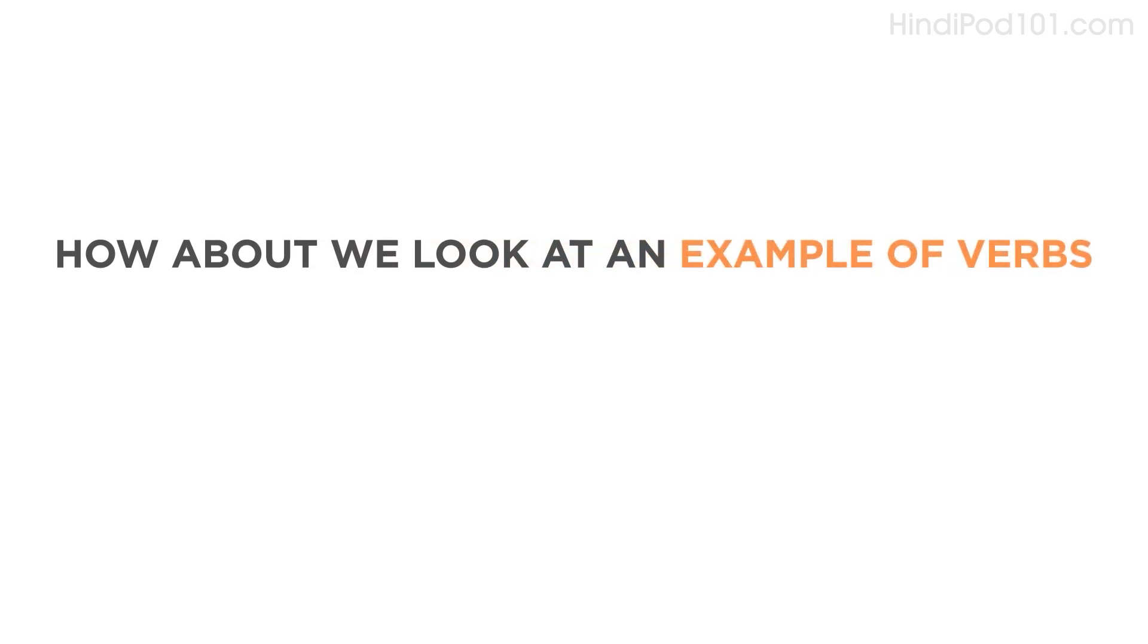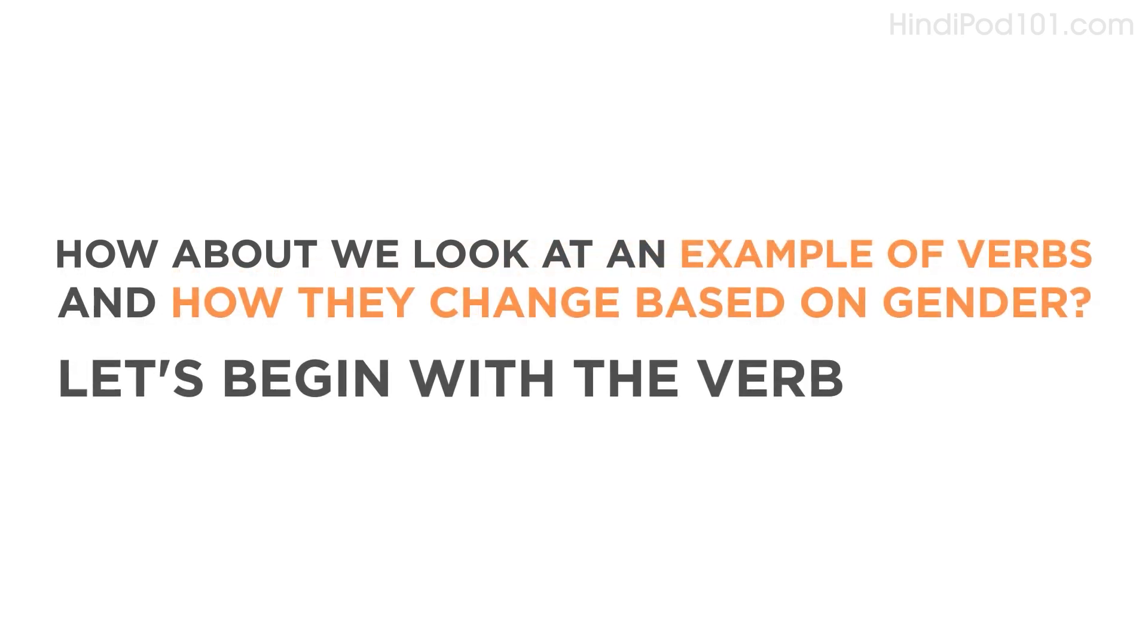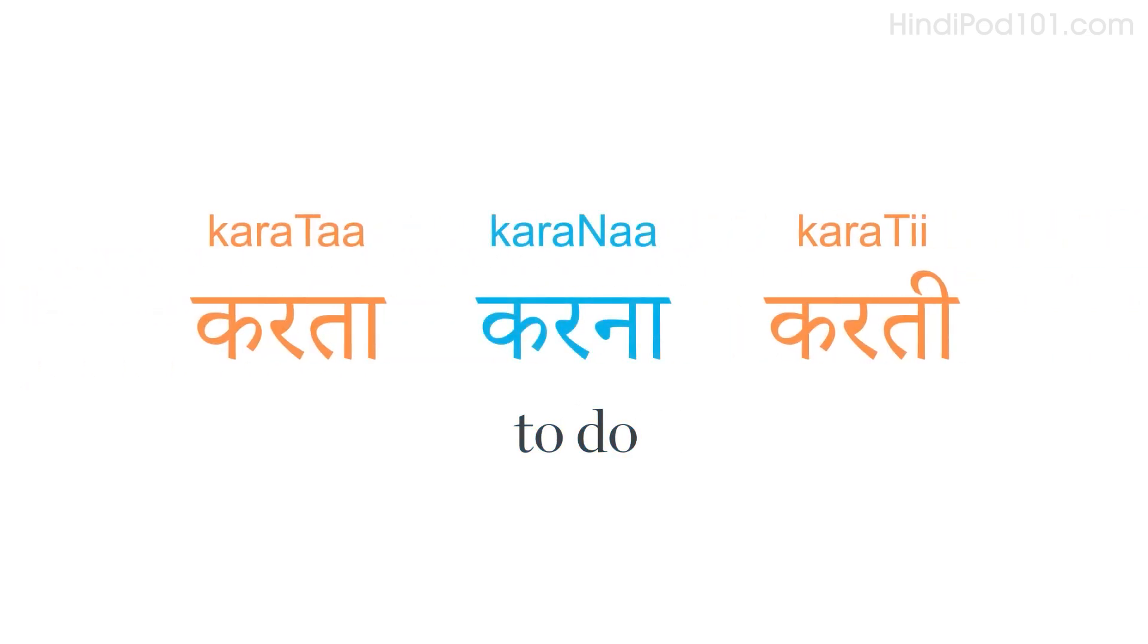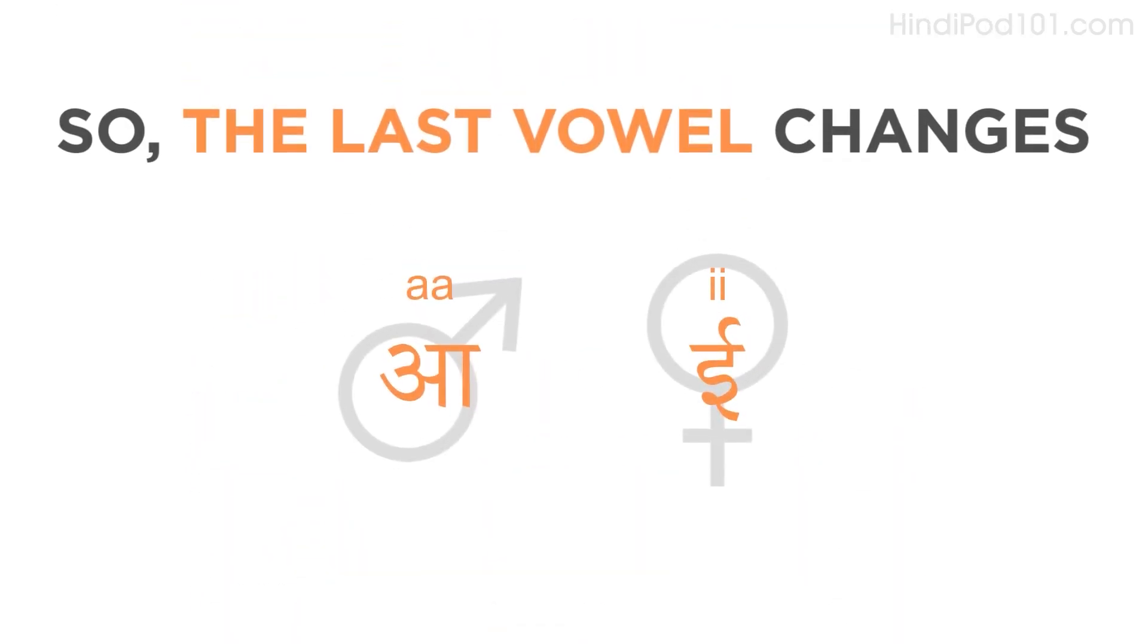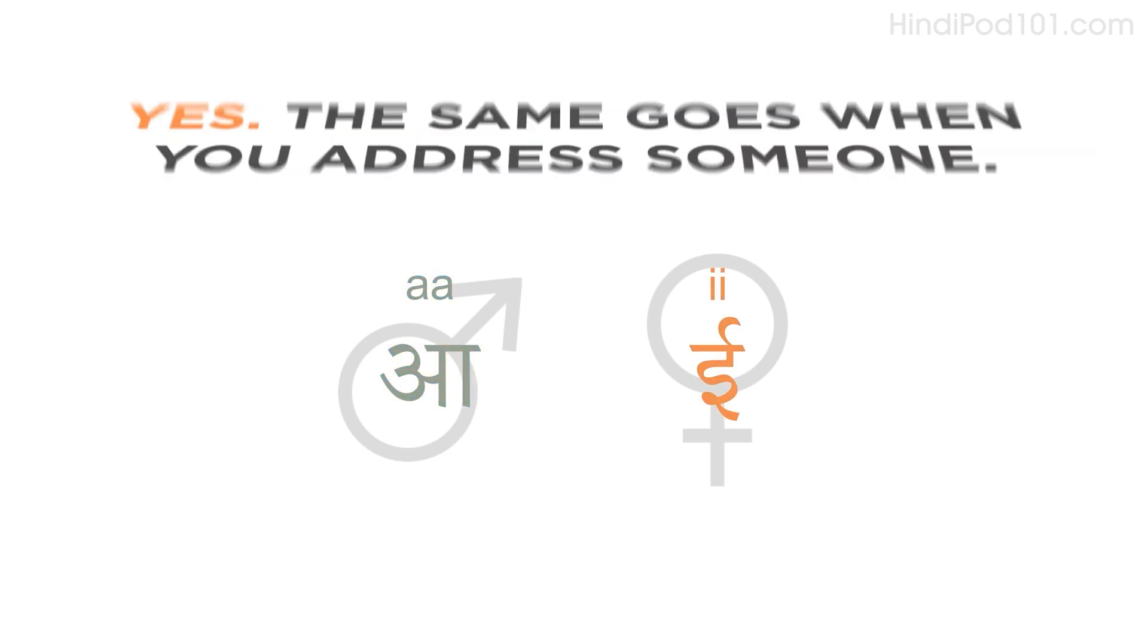How about we look at an example of verbs, and how they change based on gender? Let's begin with the verb 'to do'. In Hindi, to do is 'karna'. If you are female, you would say 'karti', and if you are male, you would say 'karta'. So, the last vowel changes. It is 'e' for females, and 'a' for males.